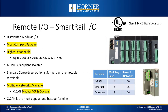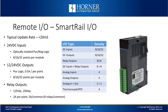Smart Rail IO is an elegant, nicely packaged, distributed modular IO. You can have up to 8 modules connected to each base, and up to 16 bases on each network. It's the most compact remote IO package and it's highly expandable. All the IO is backplane isolated. It comes with standard screw type terminal strips, and spring clamps are available and inexpensive. There are multiple networks available: C-Scan, Modbus TCP, and CANopen. C-Scan is the most popular and best performing, but CANopen is also very good. The typical update rate on the input side is below 20 milliseconds — as soon as an input changes, the Smart Rail immediately broadcasts that information and it gets to the OCS in a few milliseconds.